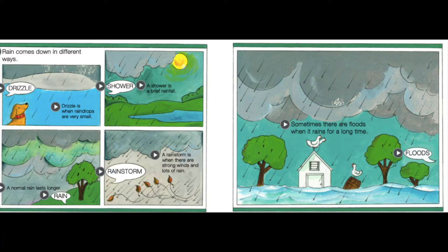Rain comes down in different ways. Drizzle is when raindrops are very small. A shower is a brief rainfall. A normal rain lasts longer. A rainstorm is when there are strong winds and lots of rain. Sometimes there are floods when it rains for a long time.